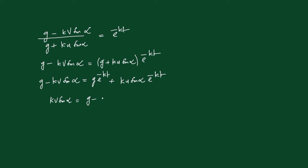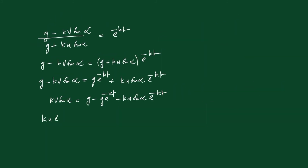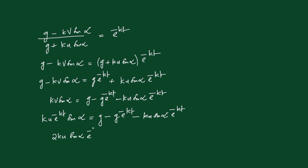Expanding the right side: g - kv sin alpha = g e^(-kt) + ku sin alpha e^(-kt). Substituting from equation 1 where v = u e^(-kt): ku e^(-kt) sin alpha = g - g e^(-kt) - ku sin alpha e^(-kt). Rearranging by bringing -ku sin alpha e^(-kt) from the right to the left: 2ku sin alpha e^(-kt) = g - g e^(-kt).